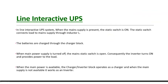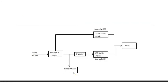Next is line-interactive UPS, which has a switch. When the main supply is present, the switch is on — the main supply provides electric power to the load, and an inductor in the UPS gets charged and the batteries get charged via the charger block. When the main supply is turned off, the switch opens and the inverter turns on to provide power to the load. So when the main power is available, the charger-inverter block operates as a charger; when it is not available, it works as an inverter.